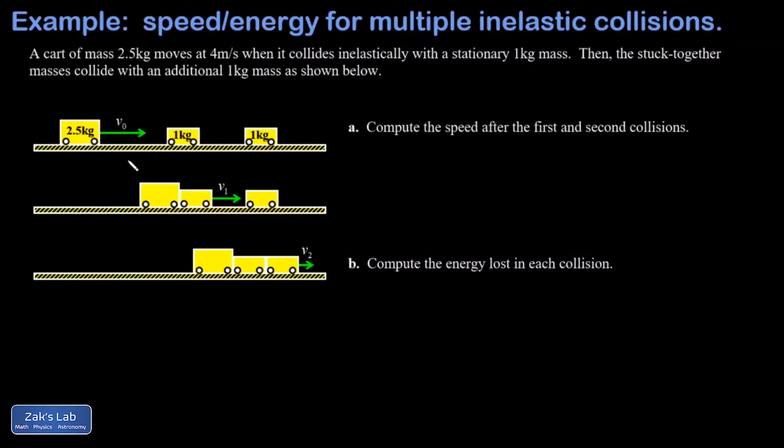In this problem we have a 2.5 kilogram cart moving with an initial speed of 4 meters per second, and it's headed into multiple inelastic collisions. In the first collision it tacks on a 1 kilogram mass that was initially stationary, and then those two combined masses run into another 1 kilogram mass.